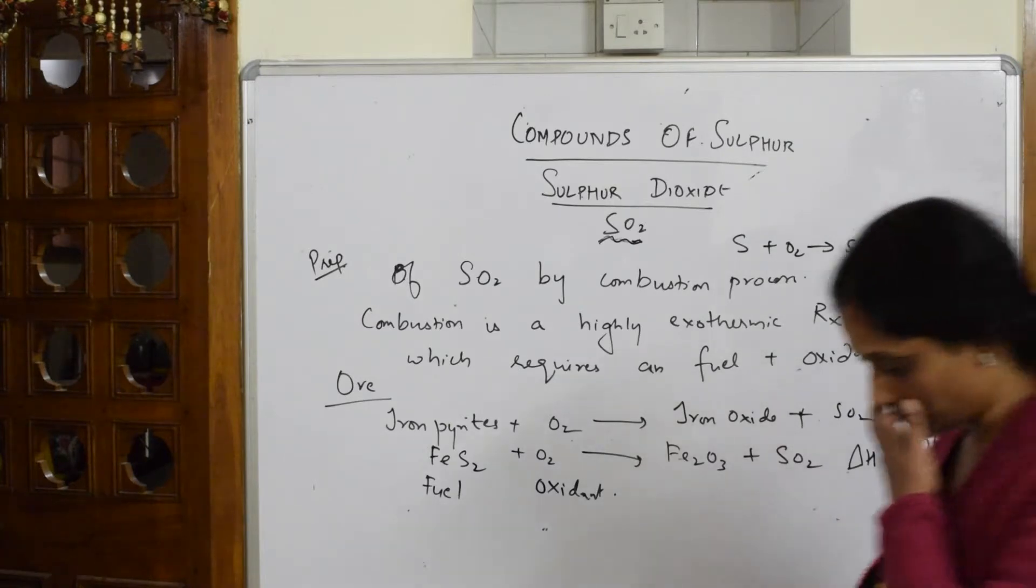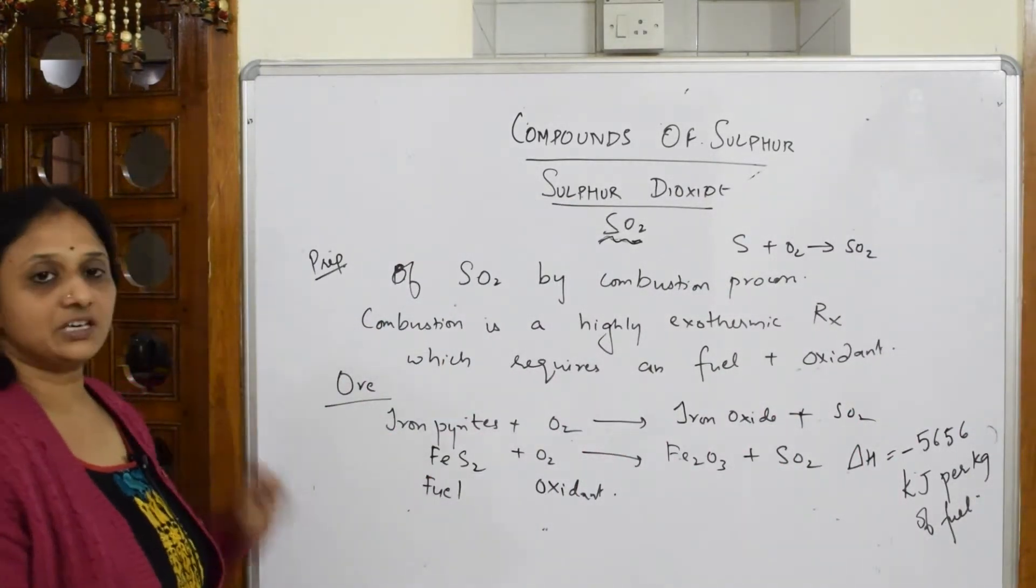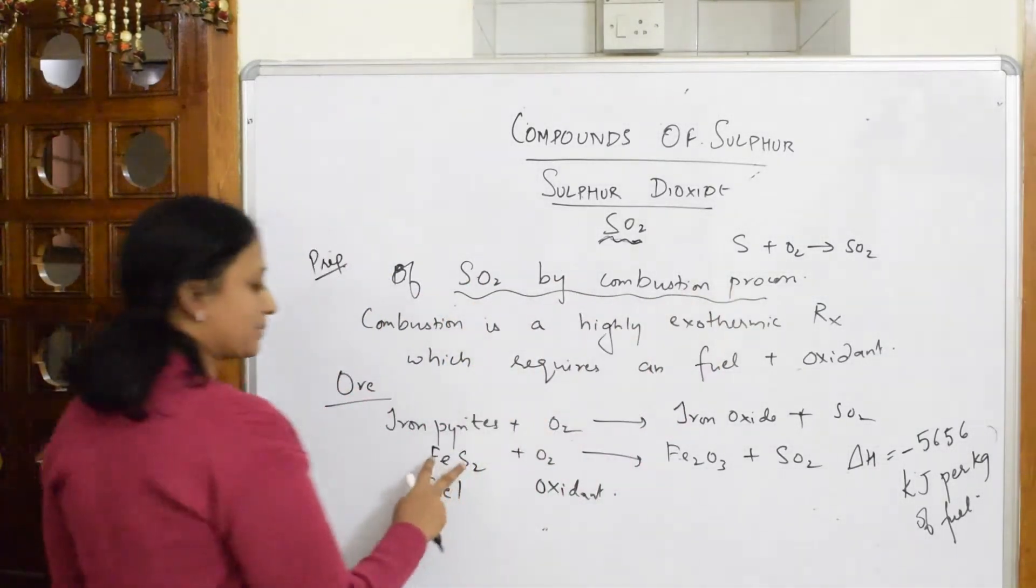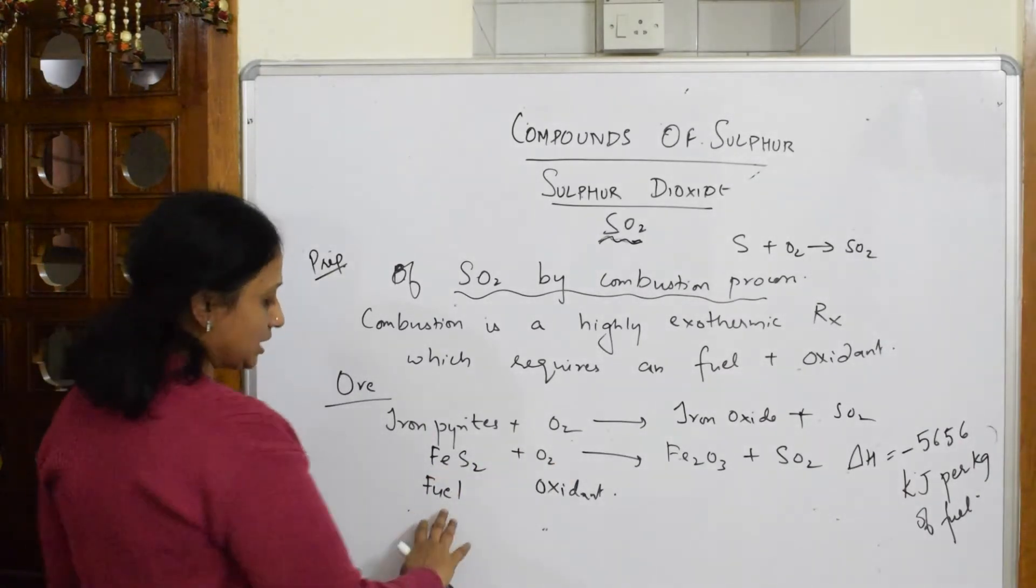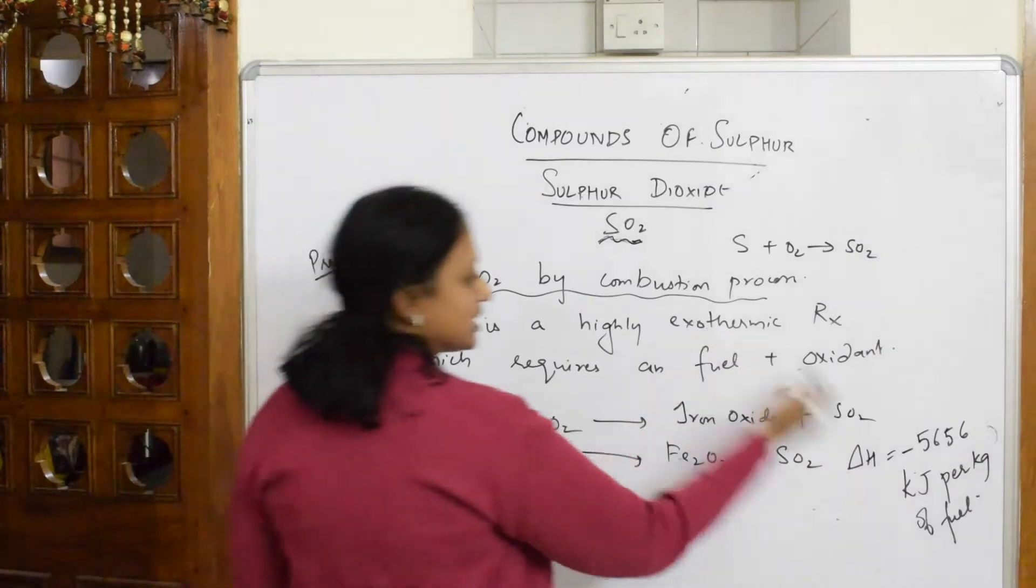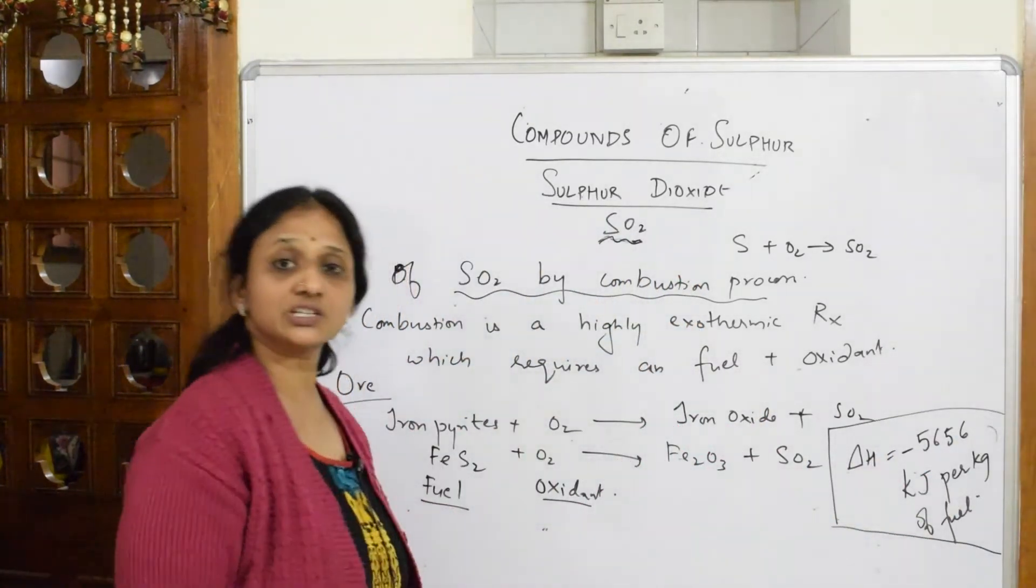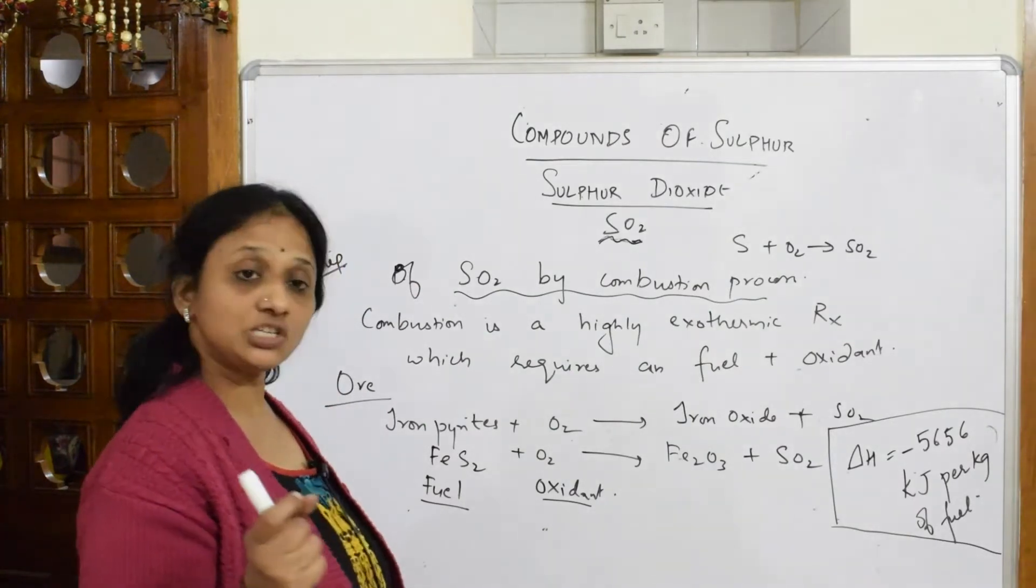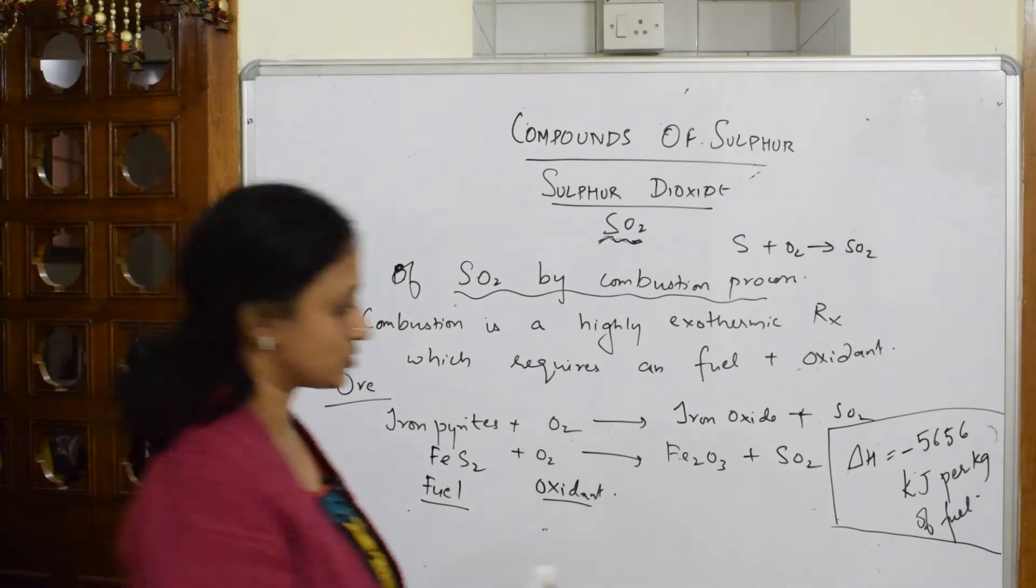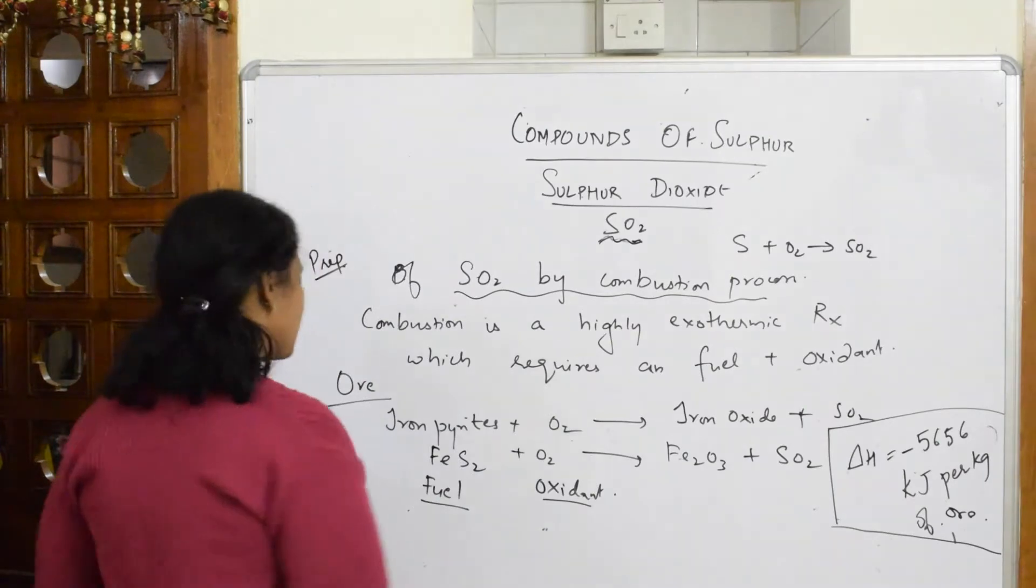So much amount of energy is released when you are trying to prepare sulfur dioxide from its ore, that is iron pyrites, FeS2. So simple combustion reaction—if they ask you, just take iron pyrite, the ore of that sulfur. This is the fuel, this is the oxidant, and that is an exothermic reaction: 5,656 kilojoules per kilogram of the ore is used.